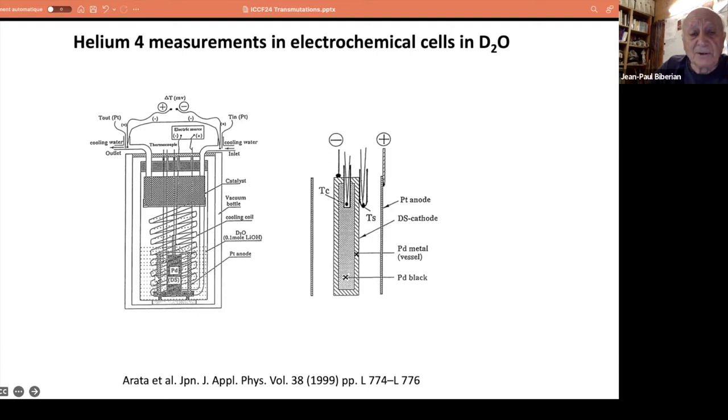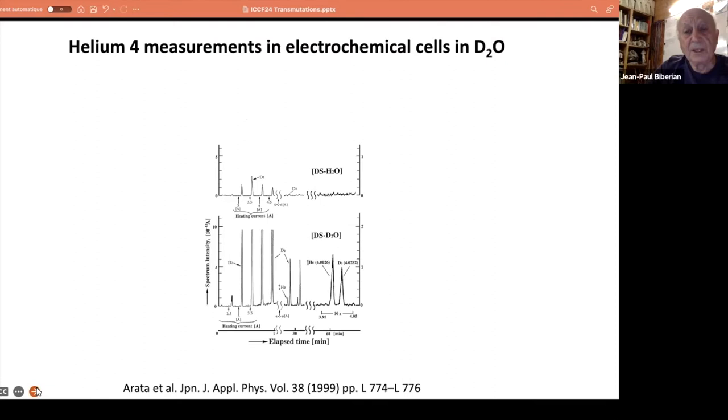This is the calorimeter he's using. This is the cell with the reactor, the electrochemical cell, and he's using a mass flow calorimetry that is putting cold water and collecting hot water. By measuring the mass flow and the difference in temperature, you can calculate the heat produced. He has produced heat, but this is not the point here; what we are looking at is helium production.